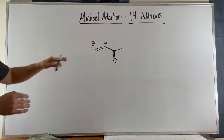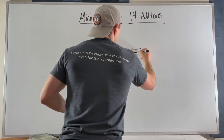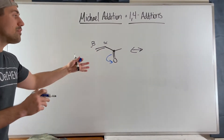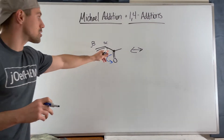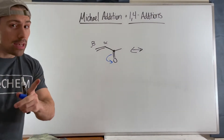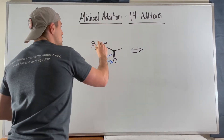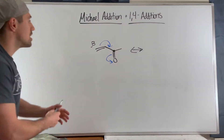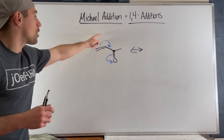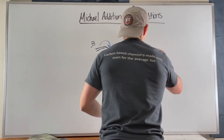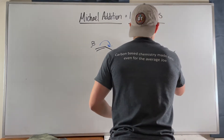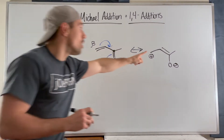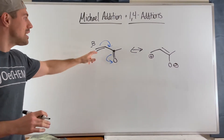So why are these so special, and what is the 1,4-addition? If we lean on our resonance drawing skills — it's no secret that oxygen loves negative charge. With a regular carbonyl we do this resonance move all the time, explaining the partial positive on the carbonyl carbon. But in this conjugated system, we can also swing this electron pair, and through delocalization of electrons we get a resonance structure that contributes heavily to the overall hybrid.